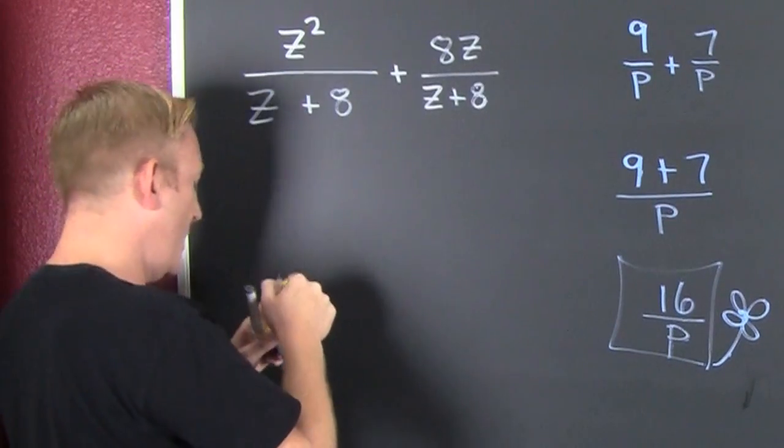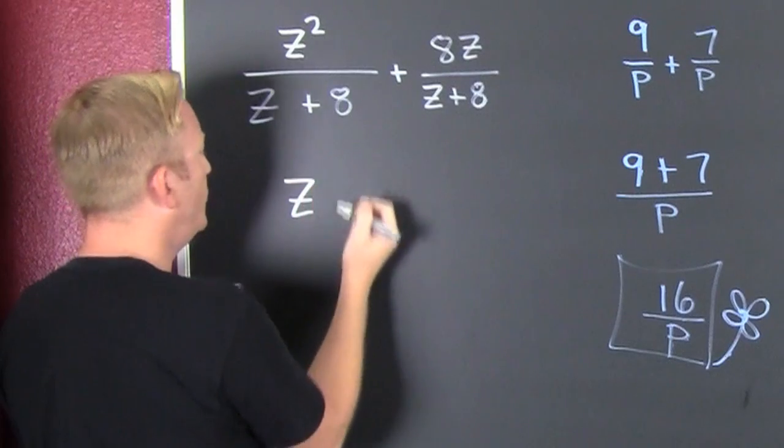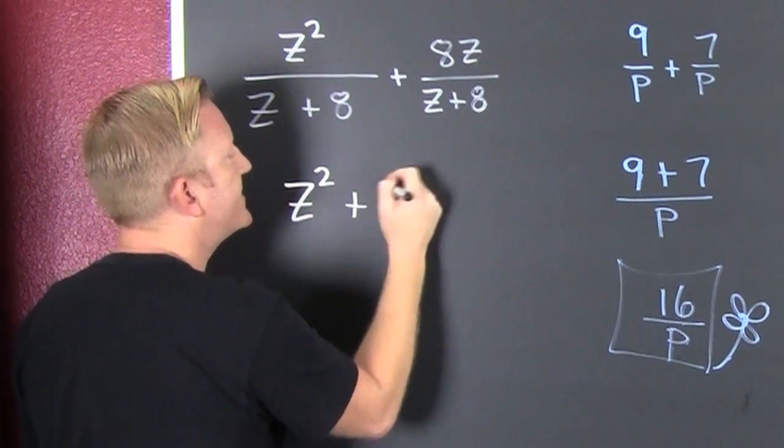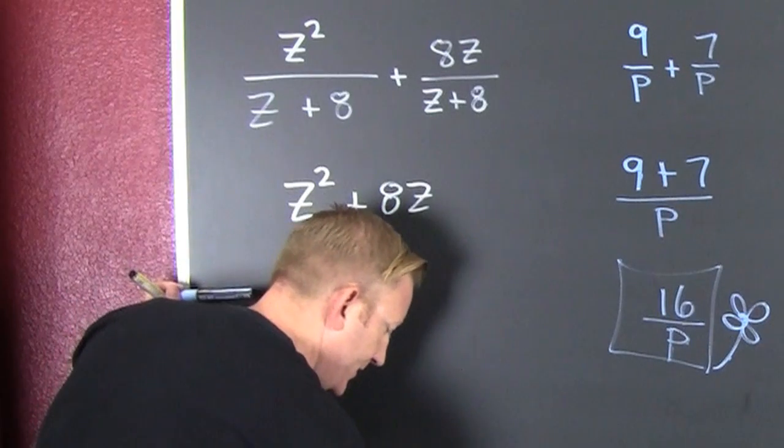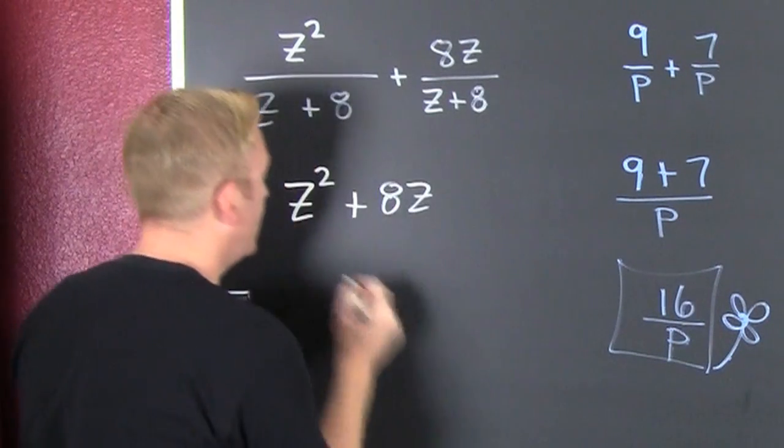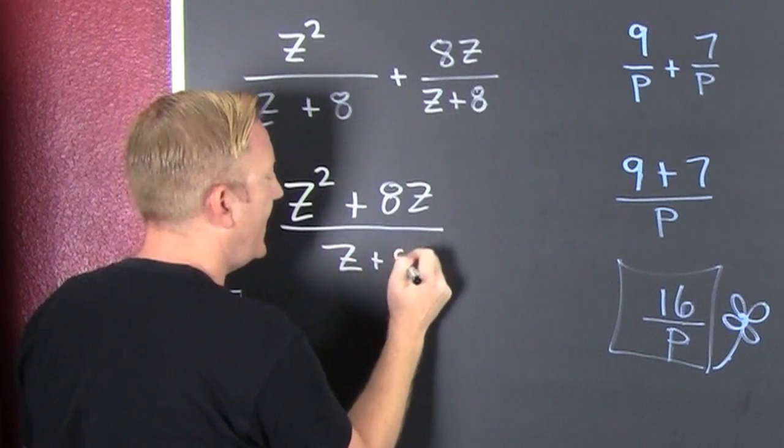I have a common denominator, so I go and I add their numerators. That's Z squared plus 8Z, and that's all over the common denominator of Z plus 8.